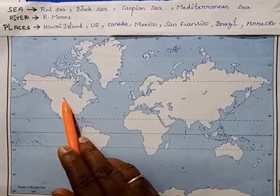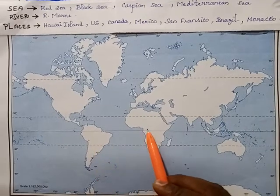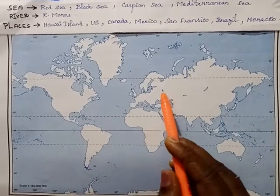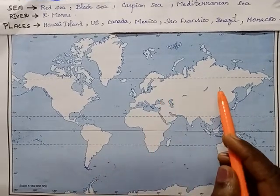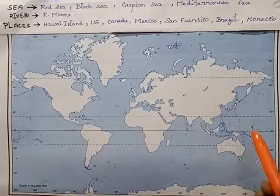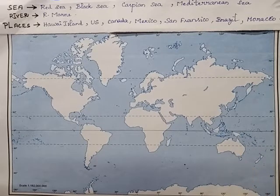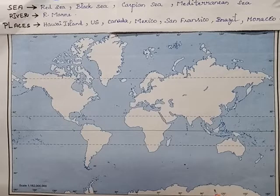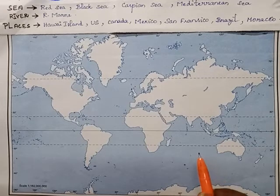North America, South America, Africa, Europe, Asia, Australia, Antarctica — this one is Antarctica. These are all the seven continents.